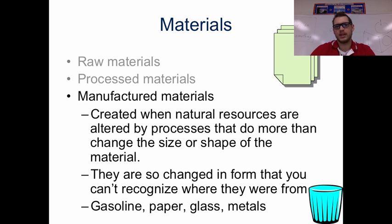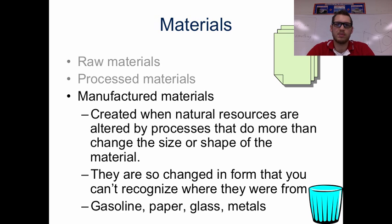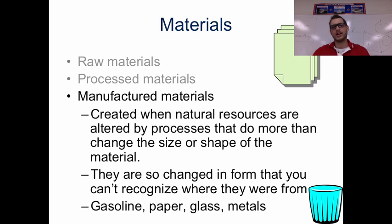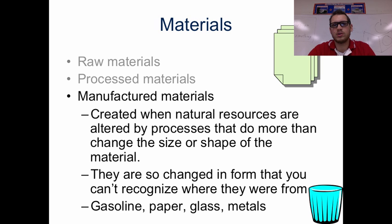Manufactured materials are created when natural resources are altered by processes that do more than just change the size or shape of the material. This is more than just cutting down a tree. We write our notes on a piece of paper, but they are made out of pulp from trees and other materials — they are so changed in form that you can't recognize where they originally came from. Gasoline is one example, glass is another. Think of the glass we use in our cars — you can get hit by a rock at 70 miles an hour and it doesn't break. It's been altered and changed over and over again to achieve a different goal.